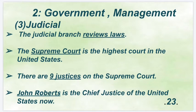Judicial Branch: The Judicial Branch reviews laws. The Supreme Court is the highest court in the United States. There are nine justices on the Supreme Court. John Roberts is the Chief Justice of the United States now.